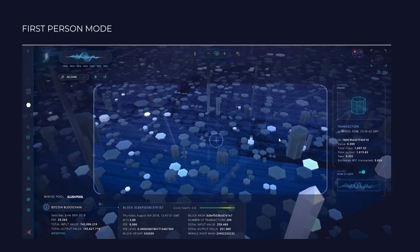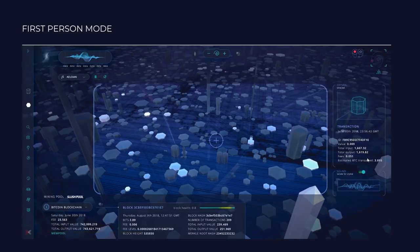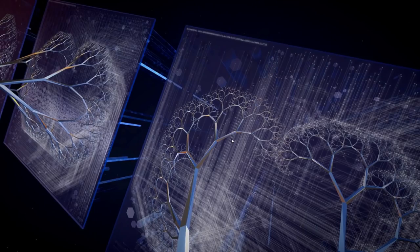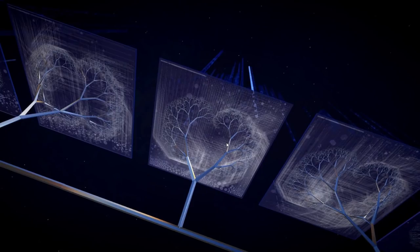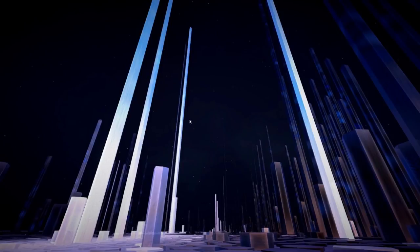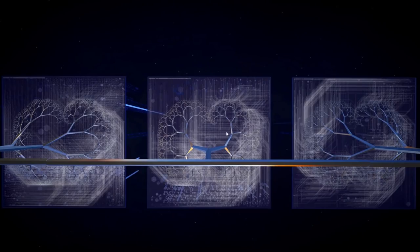Here are some screenshots of the first person mode and you can see the UI overlay that's been designed by Julie. You'll be able to click on individual transactions and see them on the right with all the detail about them. Here are a few more shots from the WebGL build, showing the Merkle tree from underneath each block, and a series of blocks all connected together with the Merkle trees along the bottom. As you can see, the WebGL build has started to look quite a bit like some of the offline render concepts we put together in the beginning.